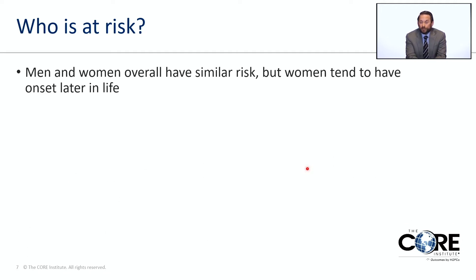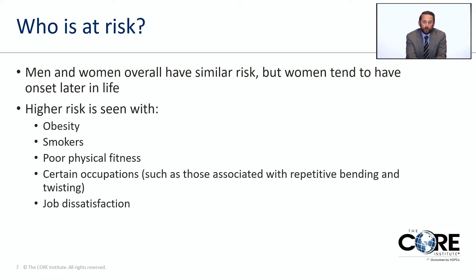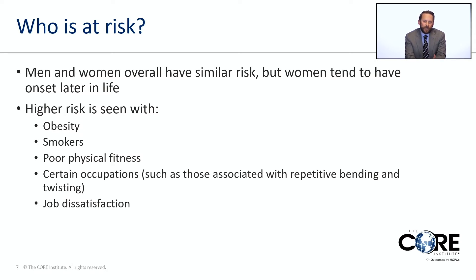Men and women overall have a very similar risk, though women tend to have an onset a little later in life statistically. Higher risk is seen with obesity, smoking — which is associated with a higher risk of back pain and many chronic pain conditions, and certain surgeries are more likely to fail in people who continue to smoke. Poor physical fitness, sitting in front of screens without engaging core muscles, and certain occupations with repetitive bending, twisting, or prolonged sitting also increase risk. Job dissatisfaction correlates as well.